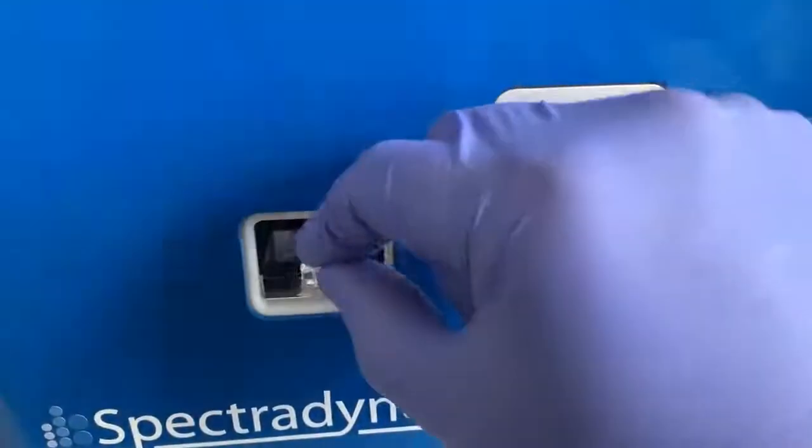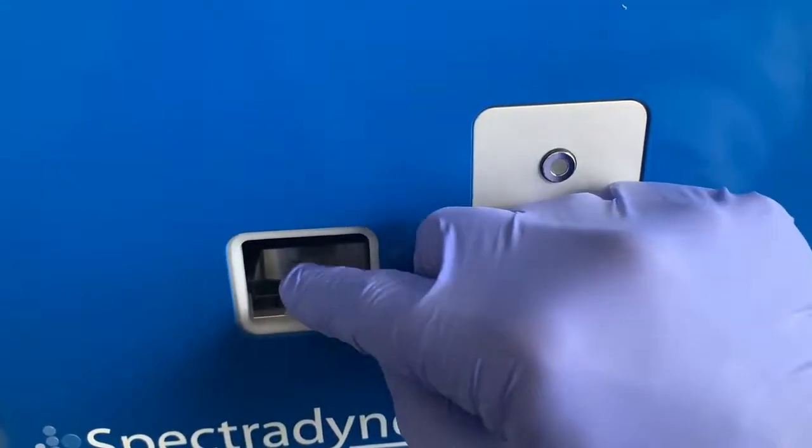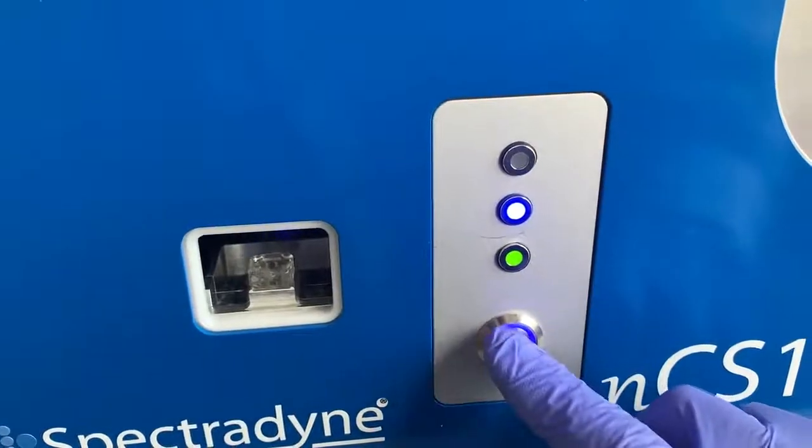Once the sample is in the cartridge, it's merely placed in the front of the NCS-1 and then raised up inside.